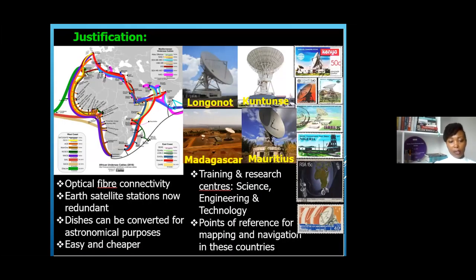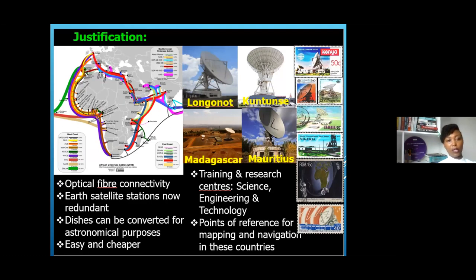The justification for this study is that the African continent is now connected to fibre optic, and therefore these satellite dishes formerly used for communication are now redundant. Instead of going to waste, they can be converted for astronomical purposes, which is cheaper and easier since building a radio telescope from scratch is a very expensive affair. These facilities can be used as training and research centers for science, engineering, and technology in these countries.